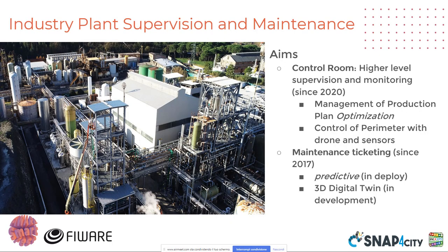The scenario is that of the Altair chemical plant that you see here in the slides. The goal was to set up a control room for high-level supervision and monitoring. It has been operative since 2020 with the management of the production plan, optimization, and also to control the perimeter with drones and sensors. Since 2017, we are also managing for them the ticketing for maintenance.